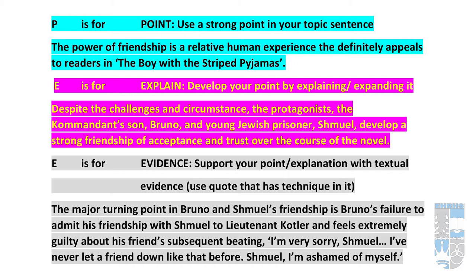It is very important to choose a quote with language techniques. The major turning point in Bruno and Shmuel's friendship is Bruno's failure to admit his friendship with Shmuel to Lieutenant Kotler — and Bruno feels extremely guilty about his friend's subsequent beating. Bruno says: 'I'm very sorry, Shmuel. I've never let a friend down like that before. Shmuel, I'm ashamed of myself.' This event really draws Bruno and Shmuel close together. Bruno has so much regret after what he did not do — he did not stand up for his friend.